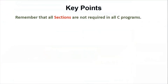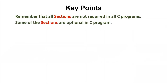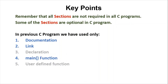Remember that all sections are not required in all C programs — some sections are optional. In the previous C program, we used only three sections: documentation, link, and main function.